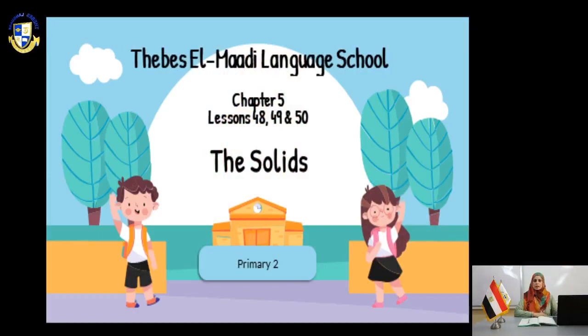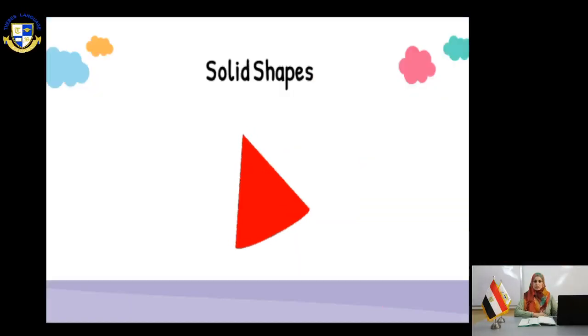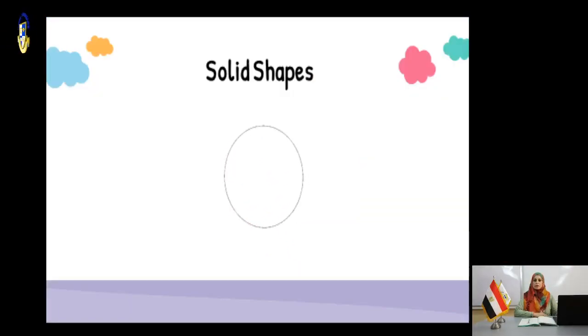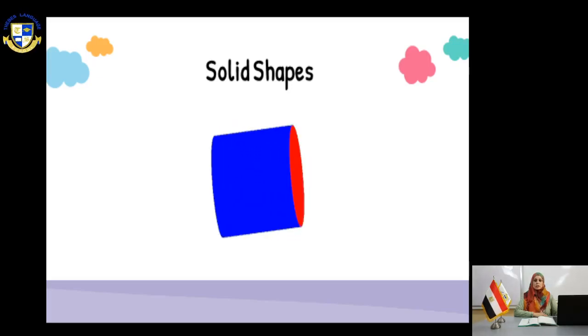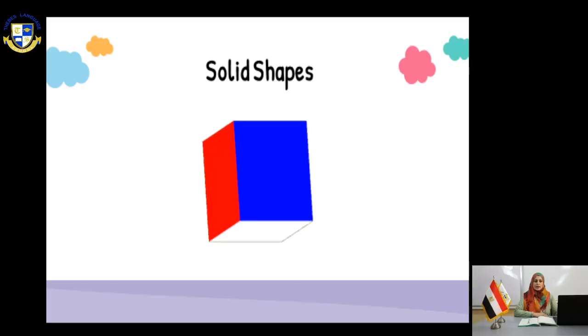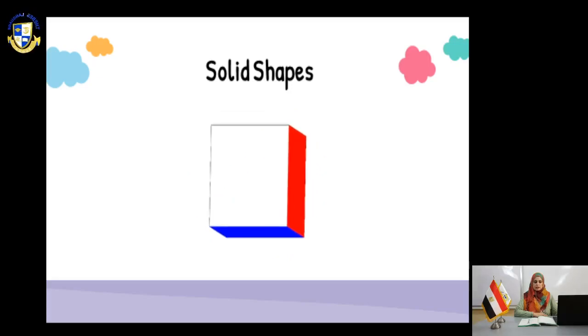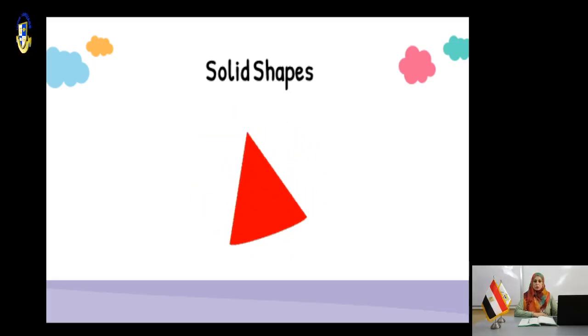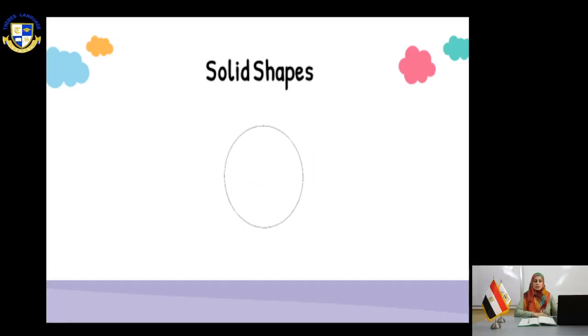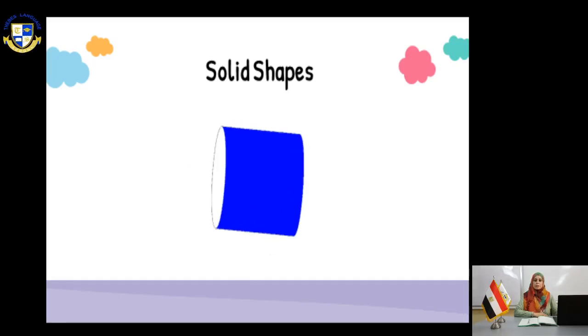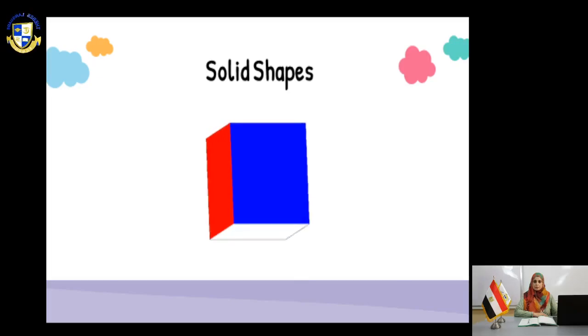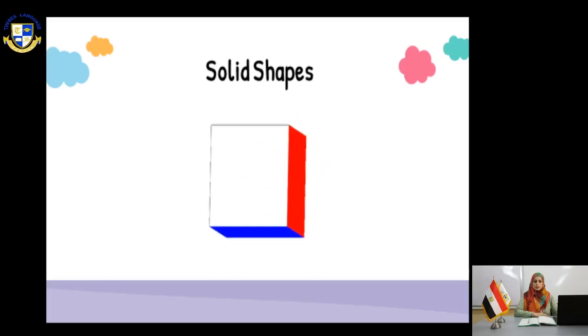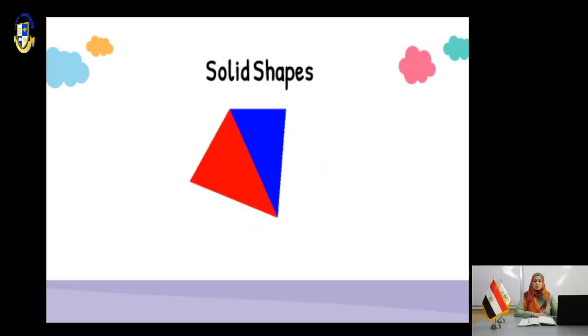Good morning, Primary 2. This is Chapter 5, lessons 48, 49, and 50: The Solids. Today you're going to talk about solid shapes. You can see a red triangle. In the next page you will see a cube, a sphere, cylinder, pyramid, prism, cuboid, and cone. We will talk about each one of these solids.